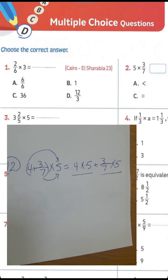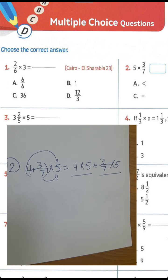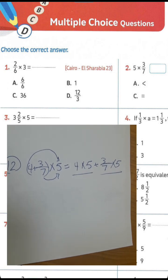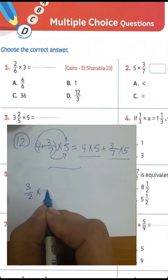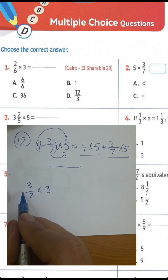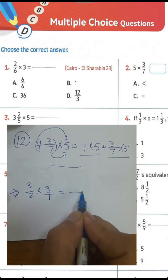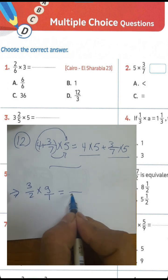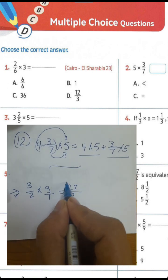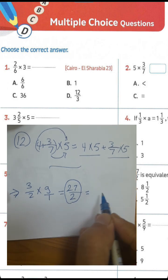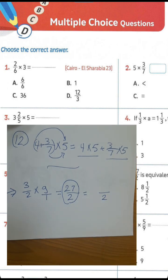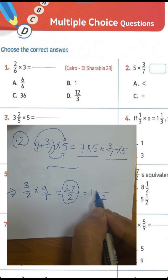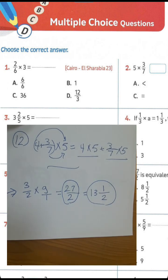Question number 1 again: 3 times 2 over 6 equals 6 over 6, equal 1. Now for this example: 3 over 2 times 9. We write 1 in the numerator: 1 times 2 equals 2, and 3 times 9 equals 27 over 2. You can convert this improper fraction to a mixed number by division. 27 divided by 2: 2 goes into 27 giving 13 with remainder 1, so the result is 13 and a half.